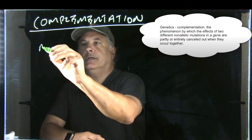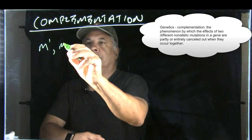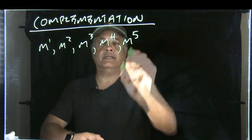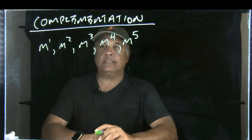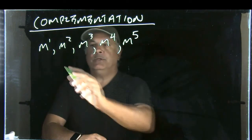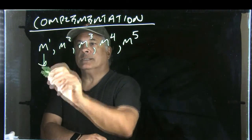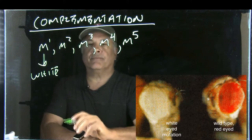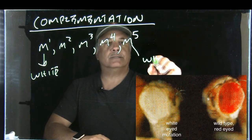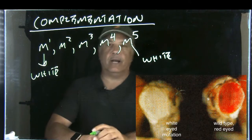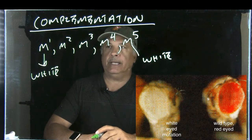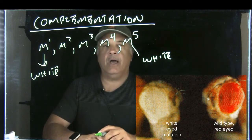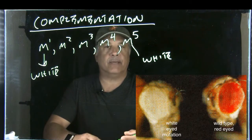Let's pretend that we have some mutations: mutation one, mutation two, mutation three, mutation four, and mutation five. Let's imagine that mutation one causes a normal red-eyed fly to have white eyes, and mutation five also does that — it causes the fly to have white eyes instead of red eyes. Normal wild type is red. How would we know whether mutation one and mutation five are causing white eyes by inactivating the same gene or not?